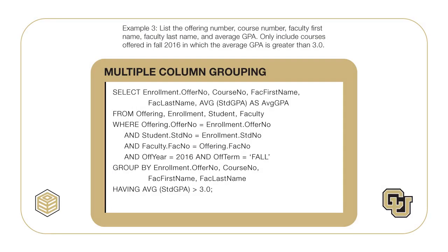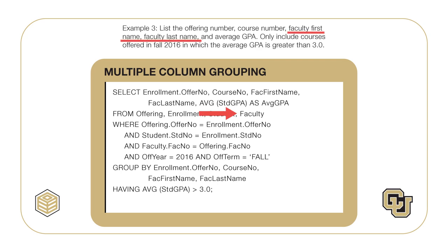Now let's use the critical questions on Example 3, answering the questions before reviewing the associated SELECT statement. Example 3 involves more tables than previous examples in this lesson. For the first critical question on the tables, the offering table is needed because of the conditions on offering year and term. The student table is needed because the result contains the average student GPA. The faculty table is necessary because the faculty name columns are in the result. The enrollment table is needed because it connects the offering and student tables. The course table is not needed because the offering table can provide the course number column and the offering.course_number column does not have missing or null values.